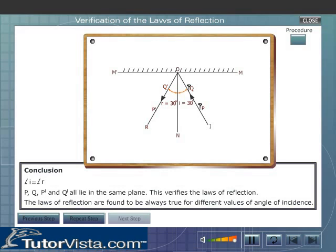This verifies the laws of reflection. Repeat the experiment for different measures of angle of incidence. The laws of reflection are found to be always true for different values of angle of incidence.